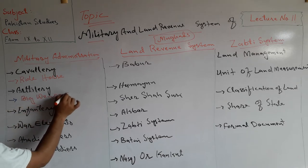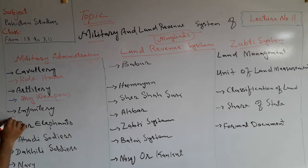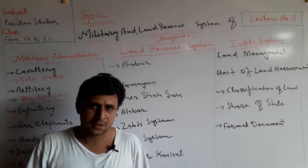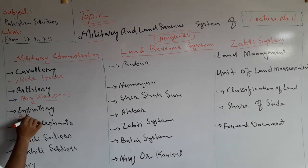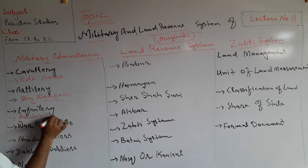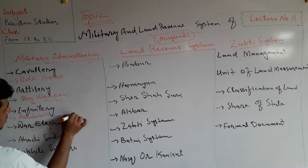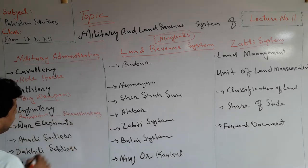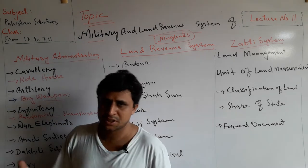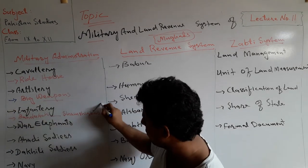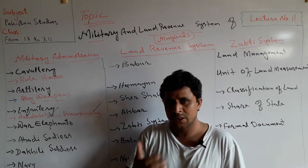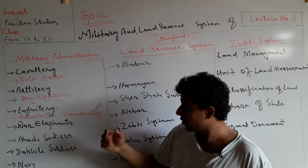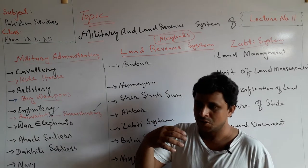Infantry soldiers fought on foot. There were two types of infantry soldiers during the Mughal period: first, Bandukchi, and second, Shamsheerbaz. Bandukchi was a rifleman — a soldier expert in using a rifle — while Shamsheerbaz was a swordsman, expert in using a sword.